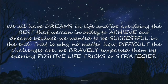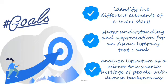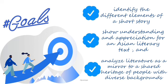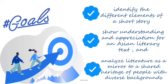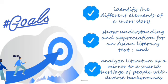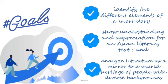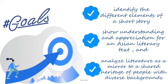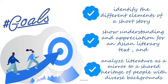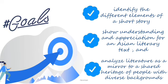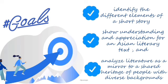Today we will read a story about an orphan who became successful. But before that, we will first identify the elements of a story in order for us to appreciate literature. These will be our goals: identify the different elements of a short story, show understanding and appreciation for an Asian literary text, and analyze literature as a mirror to a shared heritage of people with diverse backgrounds.